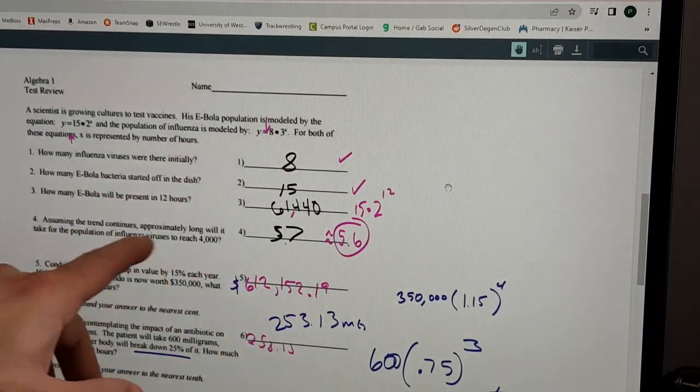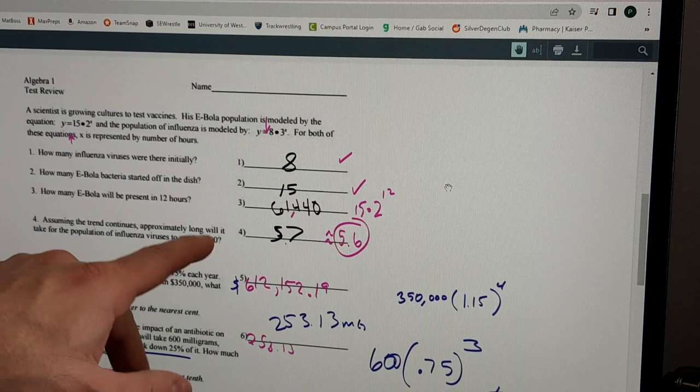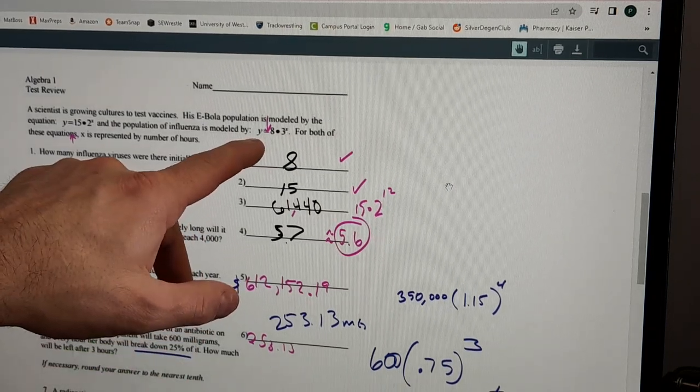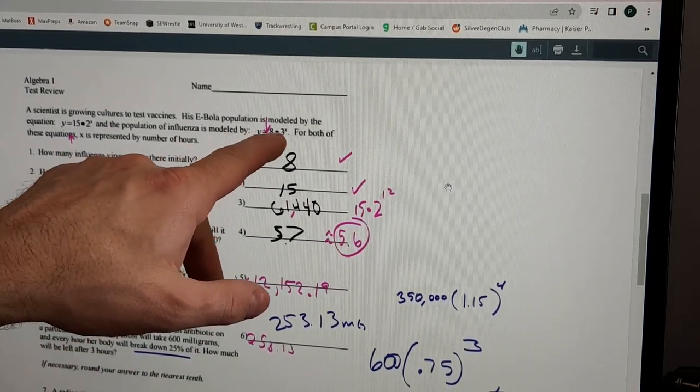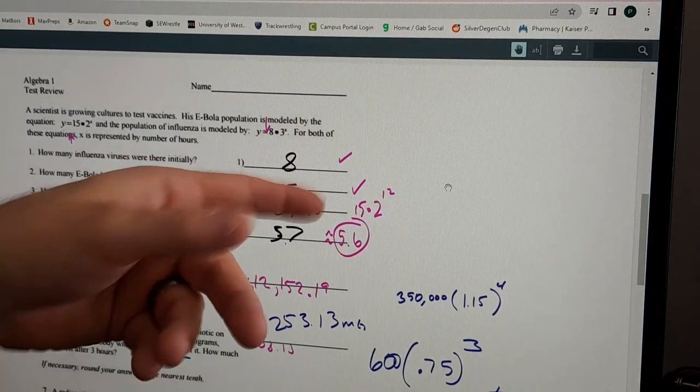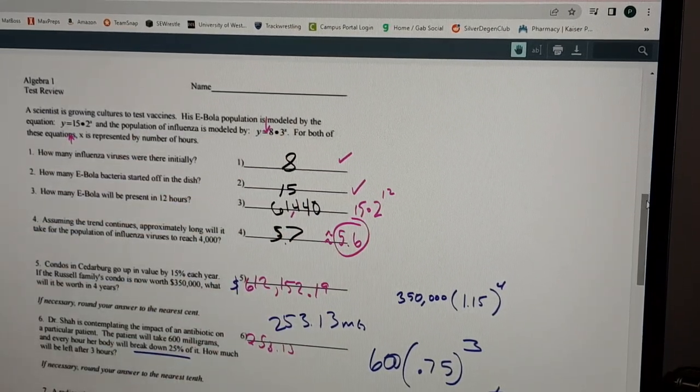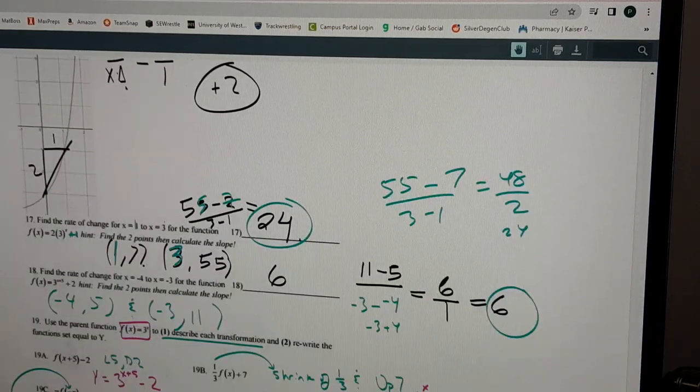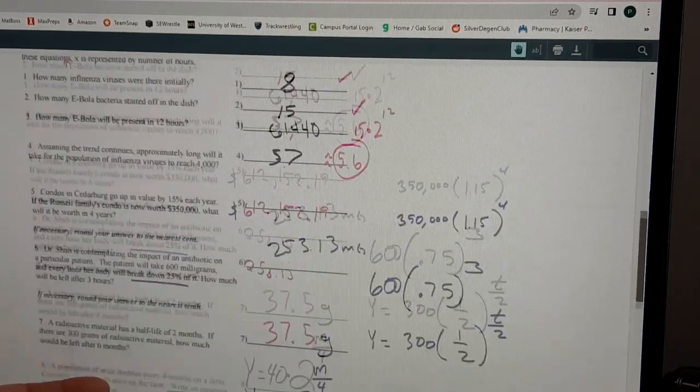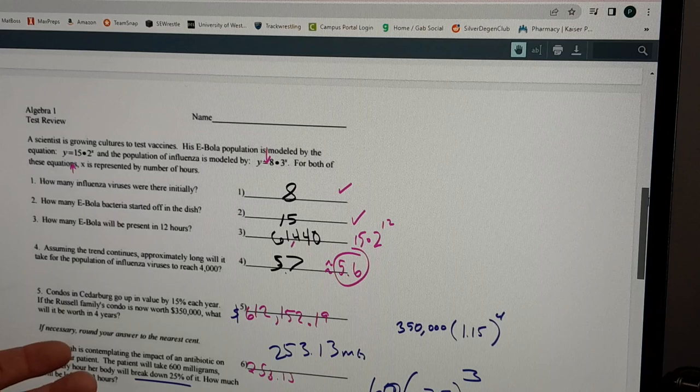So you just plug in the x's until you reach the 4,000 y values, because the y's are the output. So it's 4,000 equals 8 times 3 to the x, and you plug in numbers until you get really close to 4,000. So if there are about 20 questions on the test, we have just earned 20 points because it's five points each.